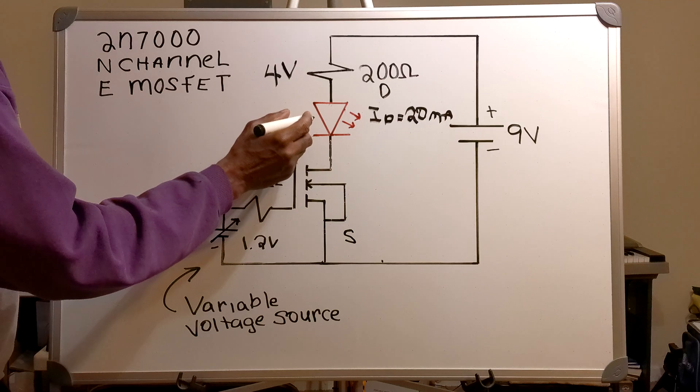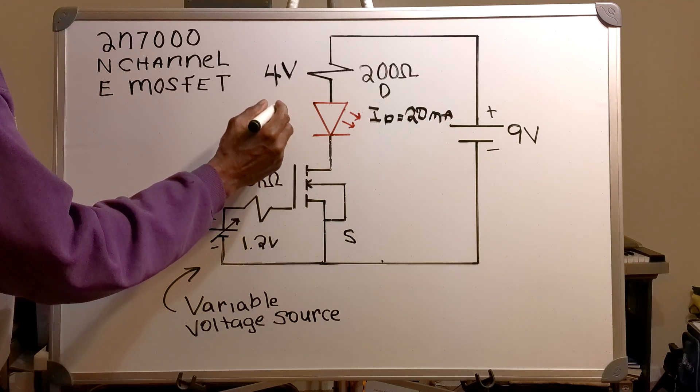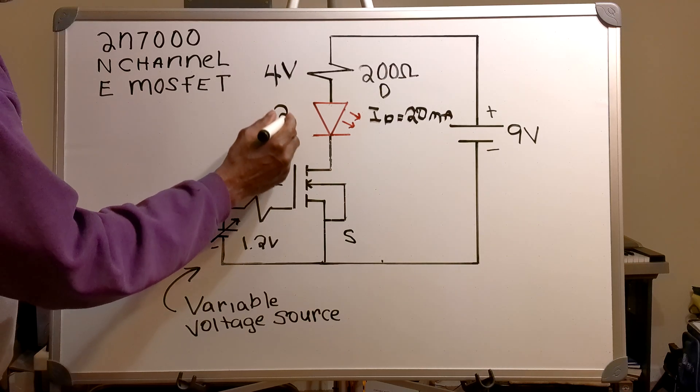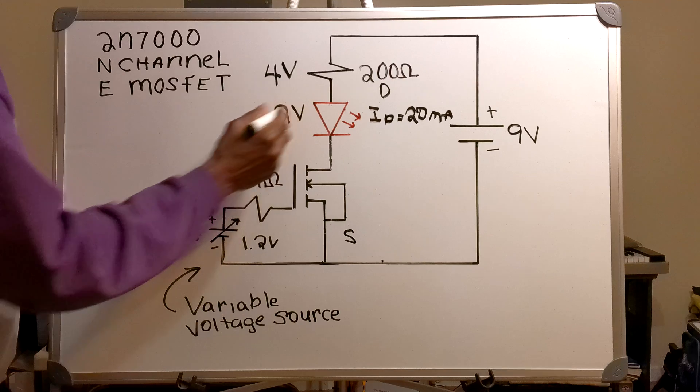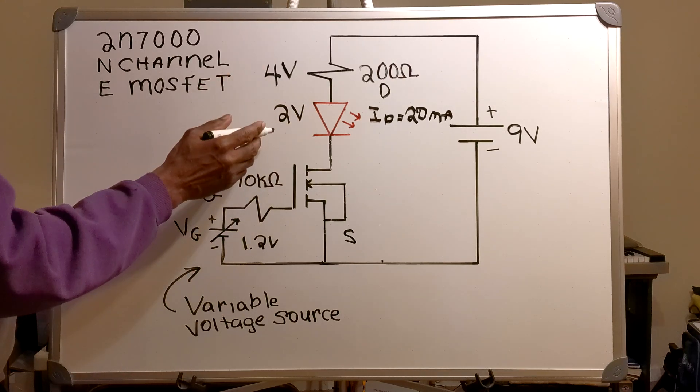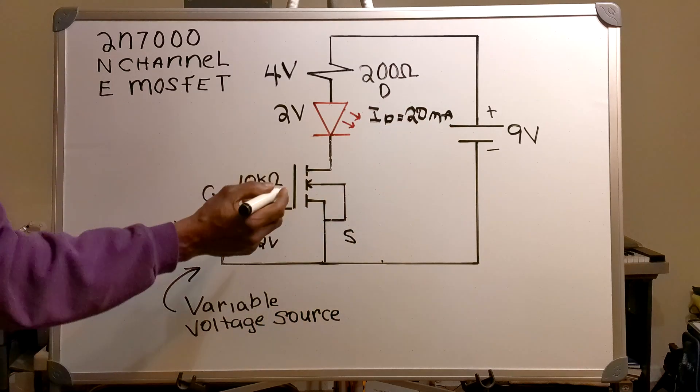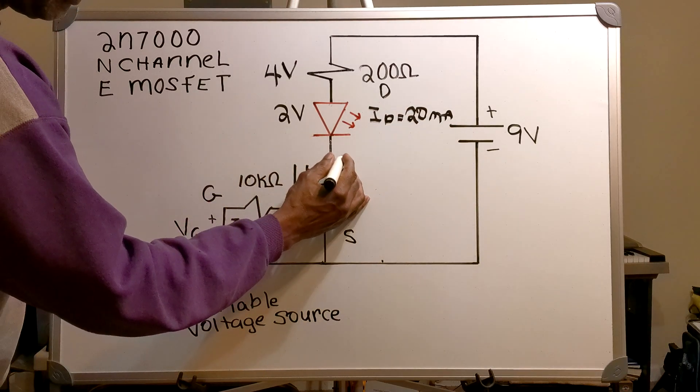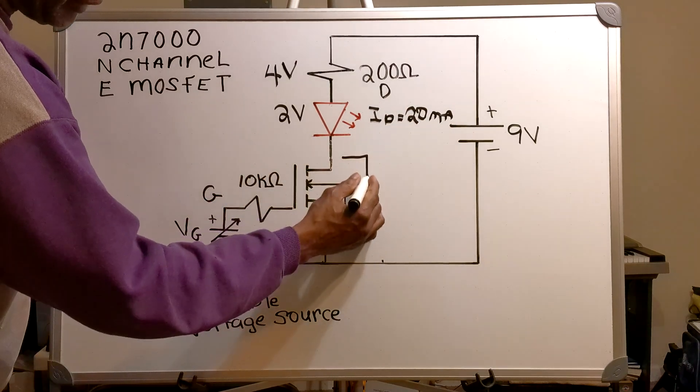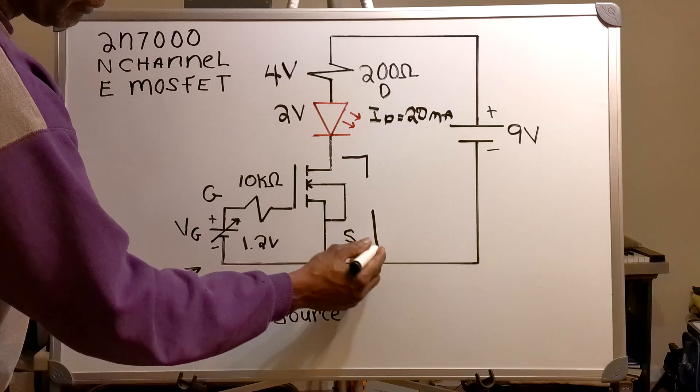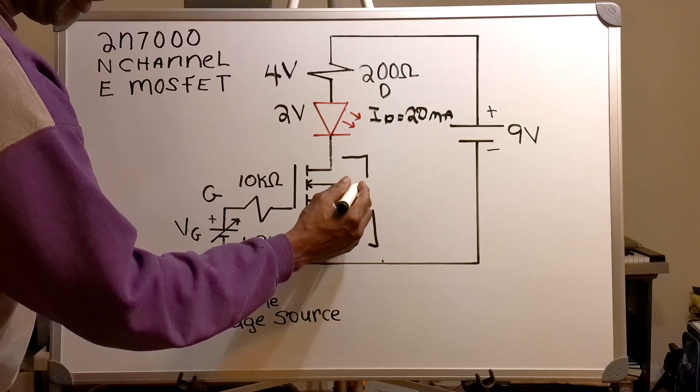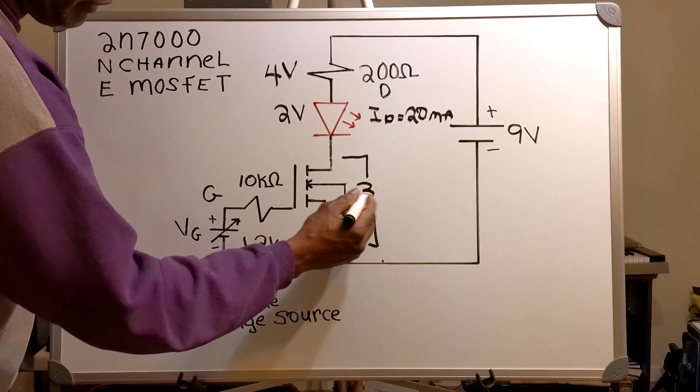My LED will have a voltage drop across it of about 2 volts. So 4 and 2 is 6. Now I've got 9 volts, that means across my VDS I'm going to have about 3 volts.